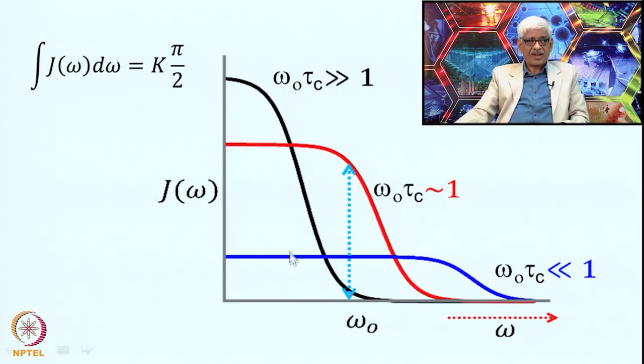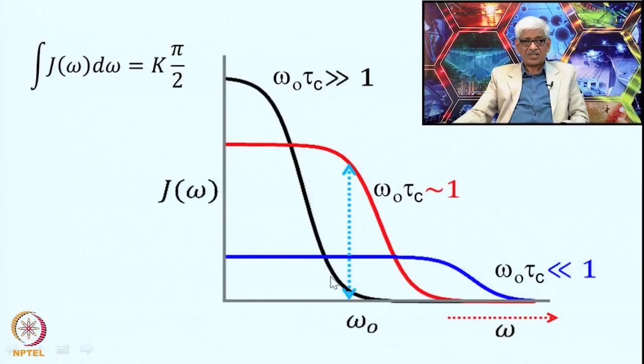The implications are: rapid motions contribute to T1, while slow motions contribute additionally to T2. If we plot R1 and R2 as a function of τc, R1 goes through a maximum and then approaches 0, while R2 increases monotonically. For ω₀τc ≪ 1, R1 is proportional to τc and increases. For ω₀τc ≫ 1, R1 approaches 0. R2 continues to increase regardless of the ω₀τc condition because of its frequency-independent term.